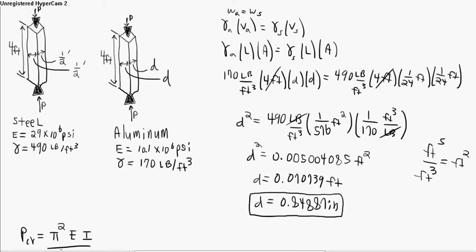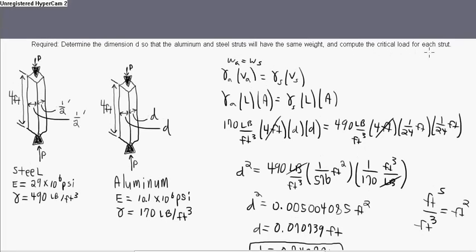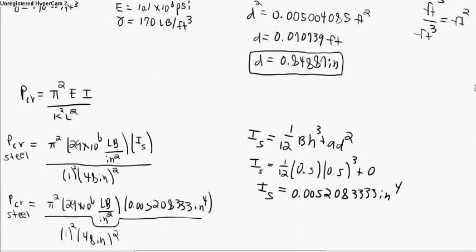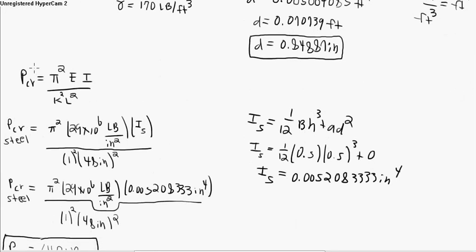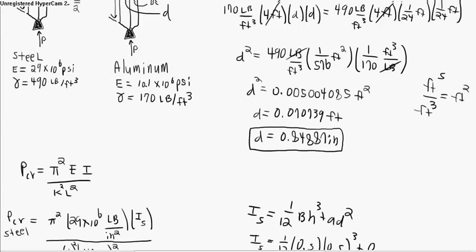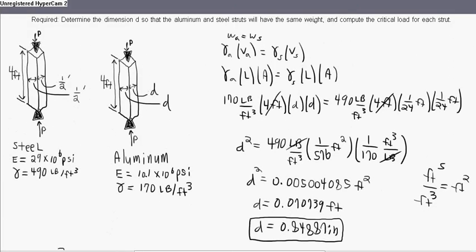Now that we know what the d is for the aluminum, we then need to compute the critical load for each strut. Now the critical load is this formula right here. Now the critical load is this centric force, and by centric I mean it's going into the center of our beam. And it's being applied to the pin. These are pins.